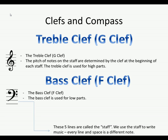These five lines are called the staff, or stave. We use the staff to write music on. Every line and space is a different note, depending on the clef, of course.